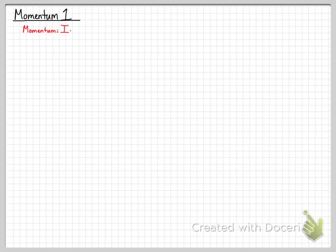We're going to start today's video talking about momentum, and we want to give a clear and simple definition of what momentum is. Momentum is inertia in motion. The way we're going to define it with an equation is that momentum equals mass times velocity, and we use P for the variable for momentum, because Newton determined momentum to be purposeful motion.